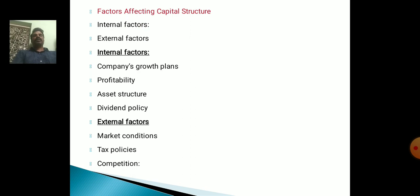Factors Affecting Capital Structure. There are two factors: Internal Factors and External Factors. Internal Factors include: Company's Growth Plans, Profitability, Asset Structure, and Dividend Policy. External Factors include: Market Conditions, Tax Policies, and Competition.